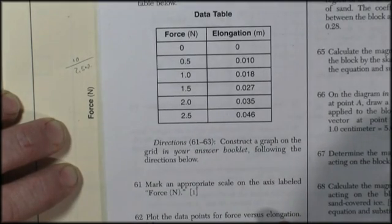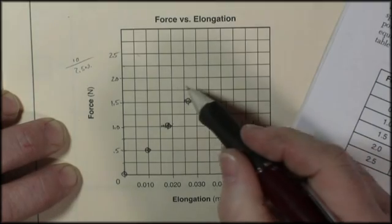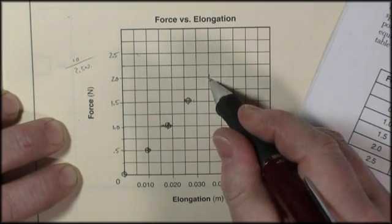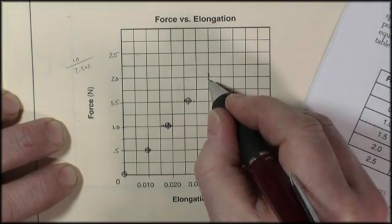At 2, we're 0.035, so 2 newtons, 0.035 will be right on the line. This is going to come in handy a little bit later.